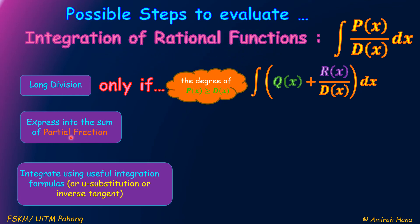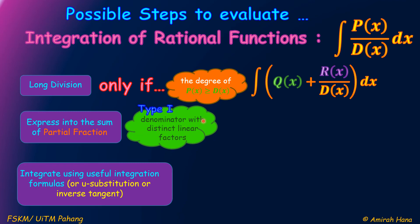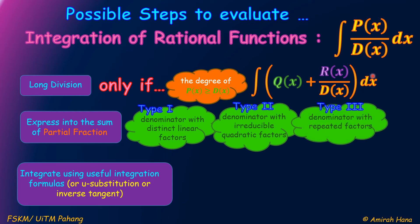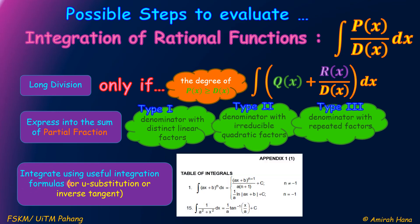When we express into the sum of partial fractions, we have 3 types based on the denominators. Type 1: denominator with distinct linear factors. Type 2: denominator with irreducible quadratic factors — meaning a quadratic function that cannot be factorized. Type 3: denominator with repeated factors. After that, we can integrate using useful integration formulas, u-substitution, or inverse tangent. Useful integration formulas will be given in the appendix.